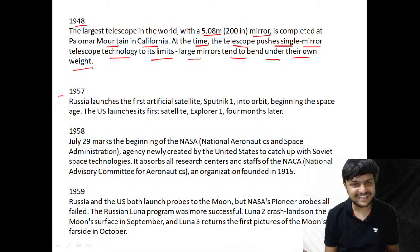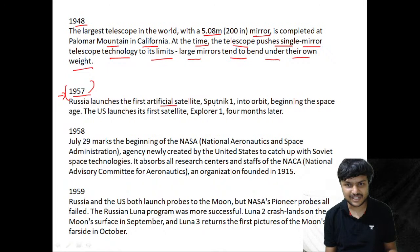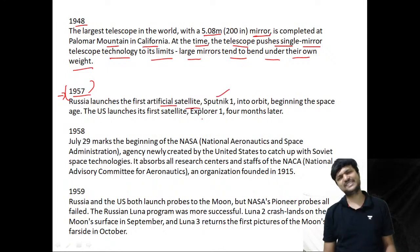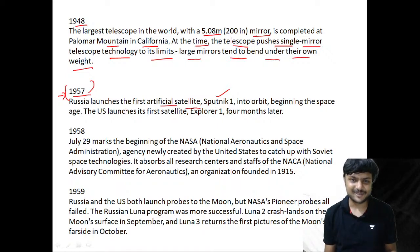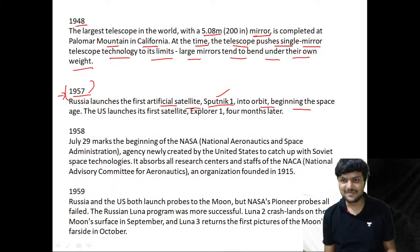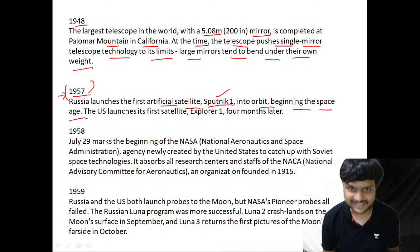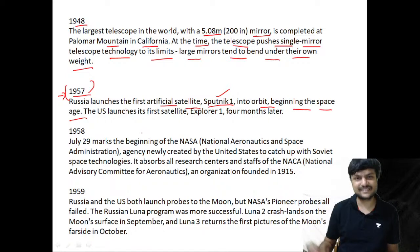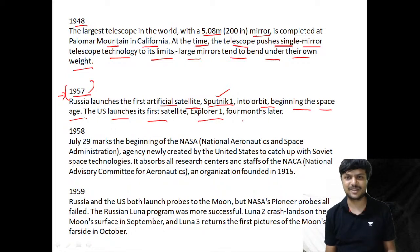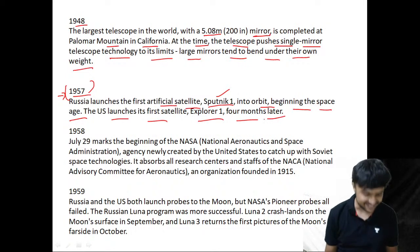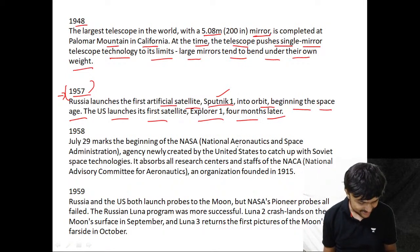In 1957, Russia launches the first artificial satellite, Sputnik 1, into orbit, beginning the Space Age. This started the space race. The US launches its first satellite, Explorer 1, four months later.